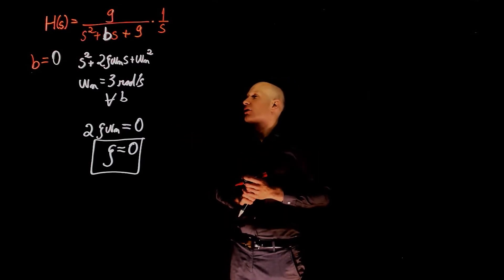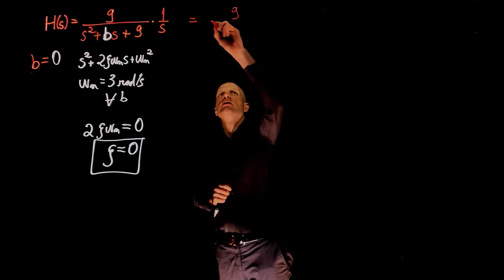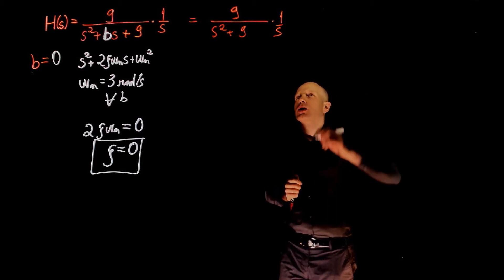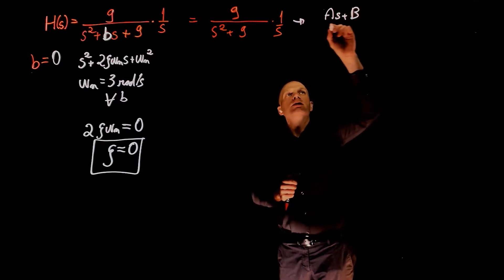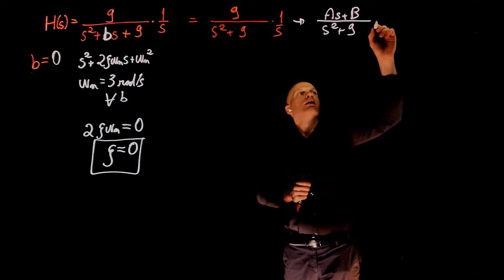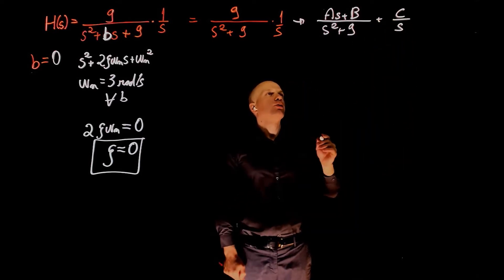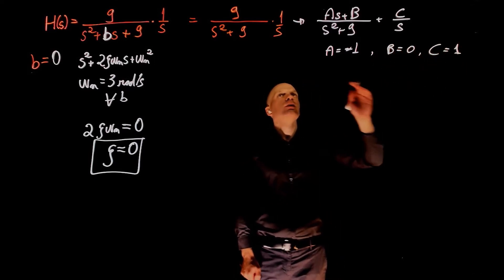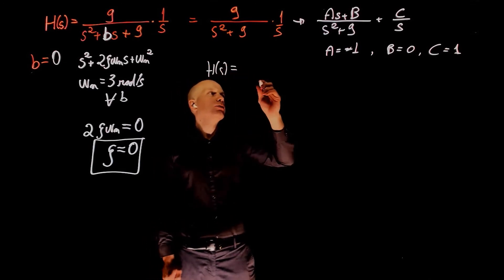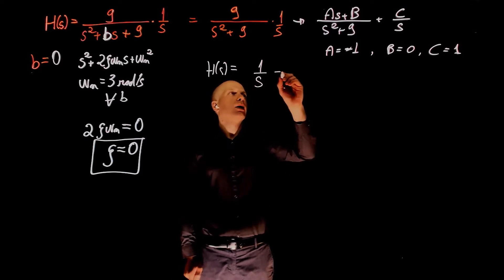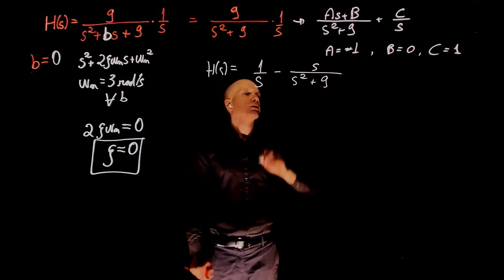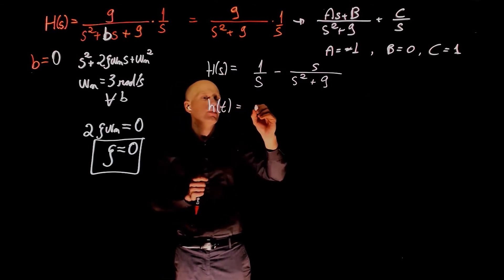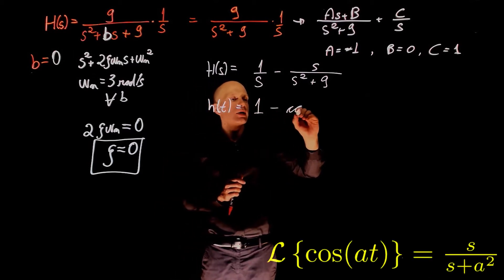Let's find the inverse Laplace of H of S for b equals to 0. This expression gives 9 over s squared plus 9, times 1 over s. The partial fraction decomposition takes the form of as plus b divided by s squared plus 9, plus c over s. Solving for the partial fractions, we find a equals to negative 1, b equals to 0, and c equals to 1. So H of s equals 1 over s minus s over s squared plus 9.